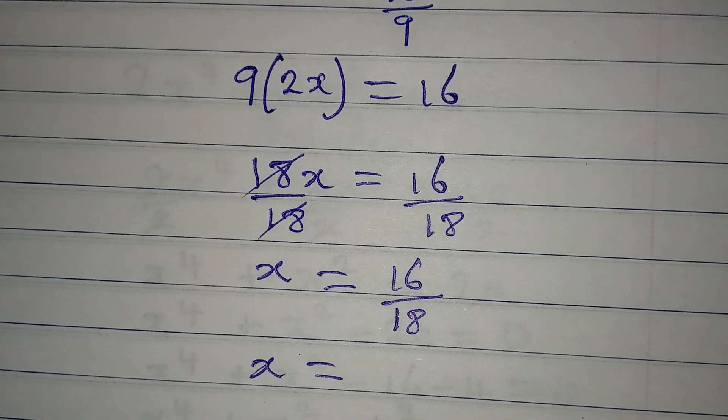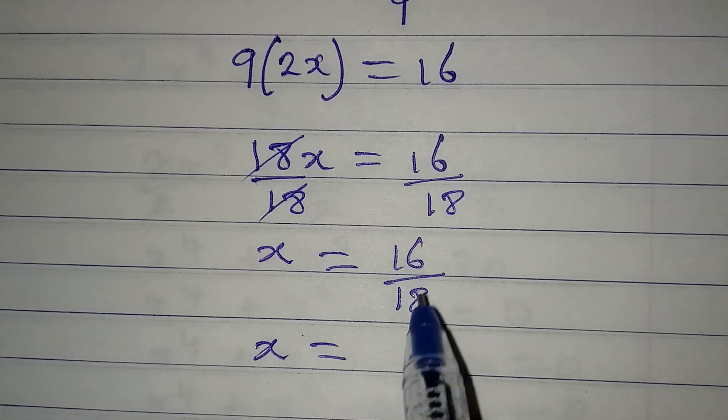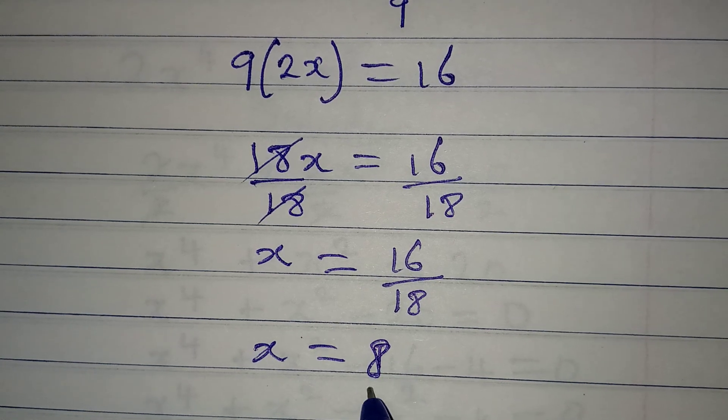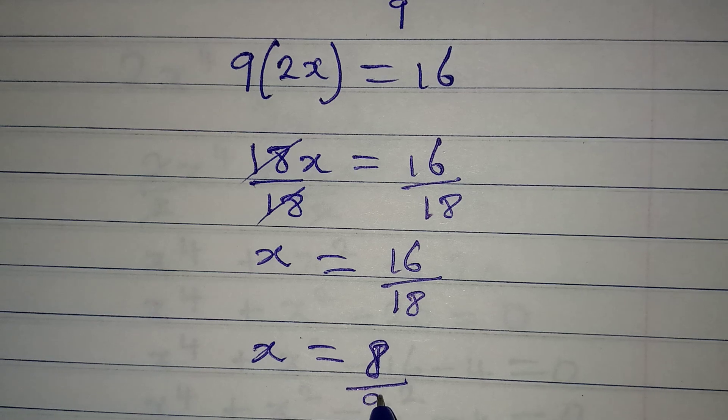The answer is yes, because two can go into each. Two into 16 will give us 8, and two can go into 18 to give us 9.